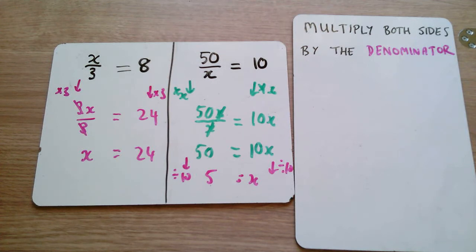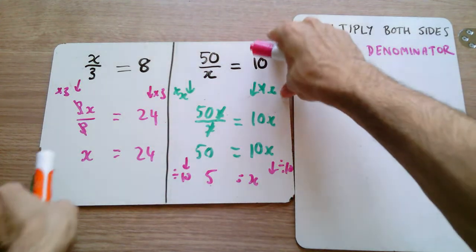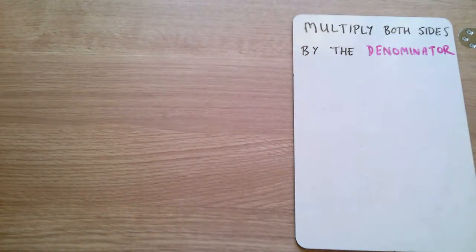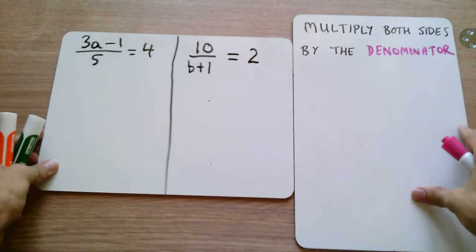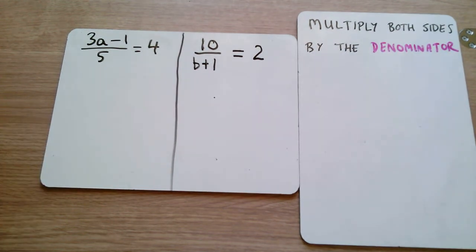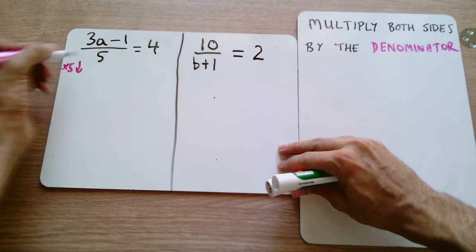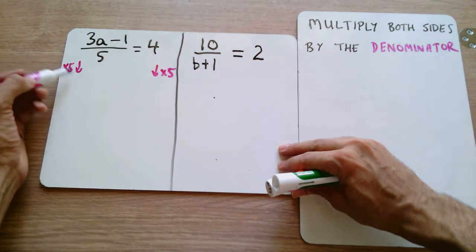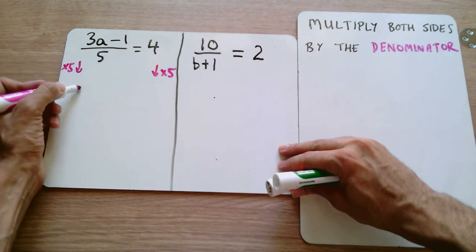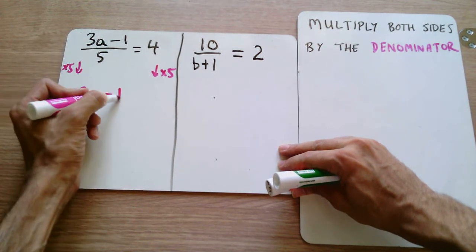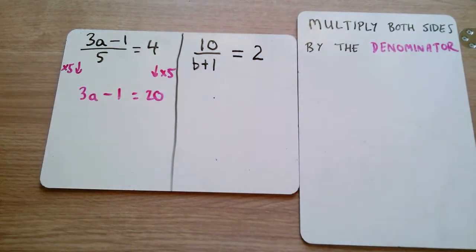Now I'm going to bring it to four other questions, two sets of two, building each time in difficulty. The next set: we have 3a minus 1 divided by 5 is equal to 4, and 10 over b plus 1 is equal to 2. We actually already saw 3a minus 1 divided by 5 at the beginning of the video. If we multiply through by the denominator — times by 5 on both sides — the denominators cancel and we're left with 3a minus 1 is equal to 20.